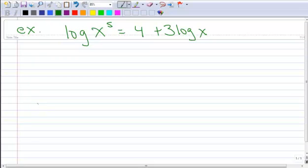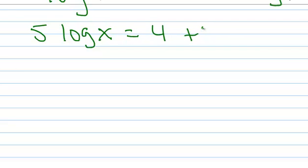So the first thing I want to do is I want to release this power, so to speak. I use that terminology a lot. So I'm going to bring that down in the front. That's my power property. So that becomes 5 times the log of x equals 4 plus 3 times the log of x.